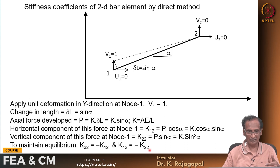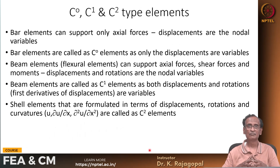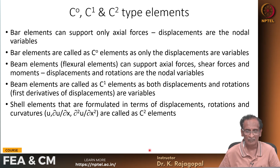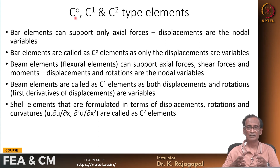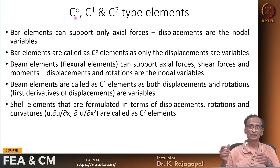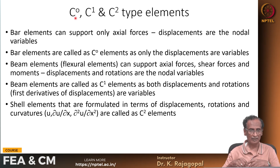We can apply unit deformations in the other degrees of freedom similarly. All coefficients — k·cos²(alpha), k·sin²(alpha), k·cos(alpha)·sin(alpha) — are exactly the same as derived earlier. This is another way of deriving stiffness coefficients directly using the definition. These bar elements are called C0-type elements because they are formulated in terms of only the displacements at nodal degrees of freedom.